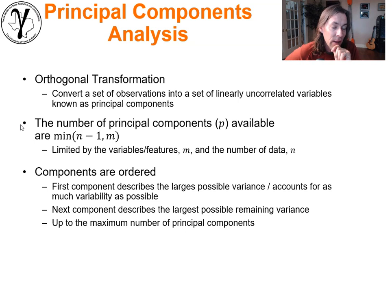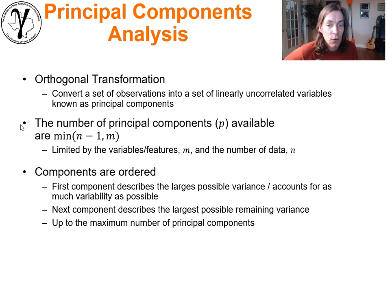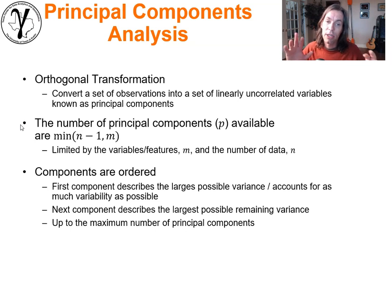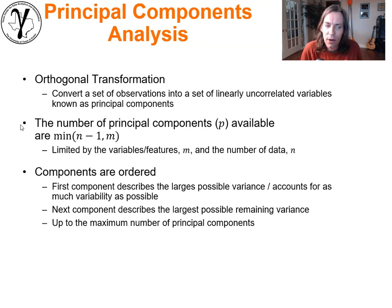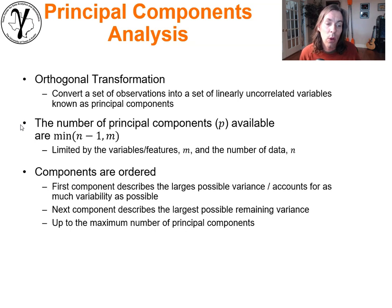If I have two data points I can describe a line but not a unique plane. If I have three data points I can describe a unique plane but not a three-dimensional space. In most of our settings the number of data points is greater than the number of features, so we won't be limited and we'll be able to have p principal components.